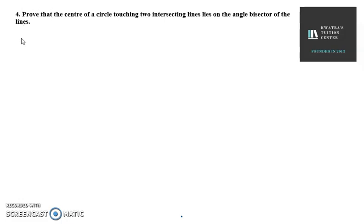Hello everyone, let's start with question number 4 of exercise 9.3. So it says, prove that the center of a circle touching two intersecting lines lies on the angle bisector of the lines.